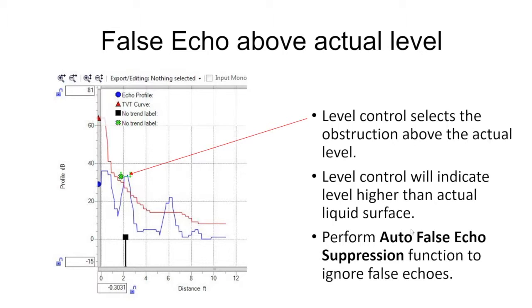Here's an example of an echo profile showing a false obstruction above the actual level. In this particular one at six feet we have a good echo at the actual level, but at two feet I'm getting a strong echo that is higher than our red TVT line, so the radar gauge selects that as our true echo.